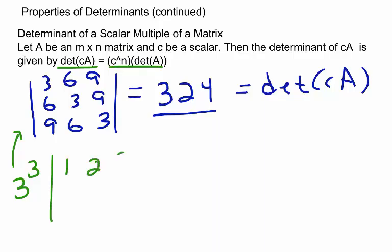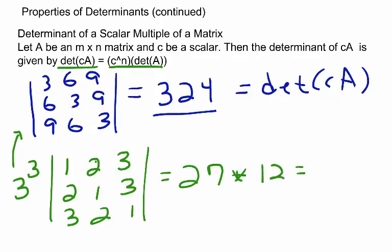Times the determinant of A, where A is the same matrix as before, with a 3 factored out. Now we have 3 to the third power is 27, and our determinant turns out to be 12. 27 times 12 equals 324. So this is an example of how the property determinant of a scalar multiple of a matrix works.